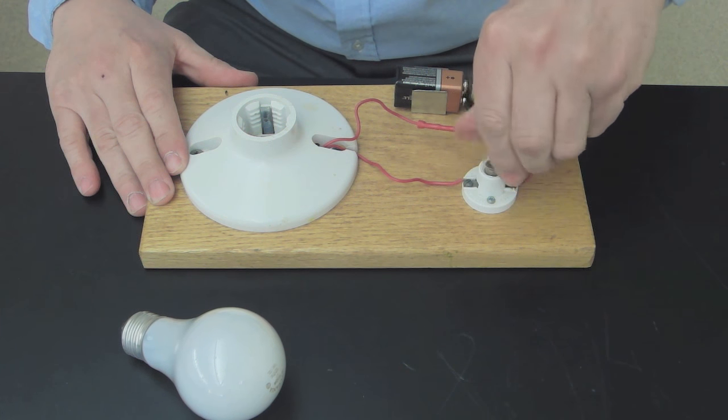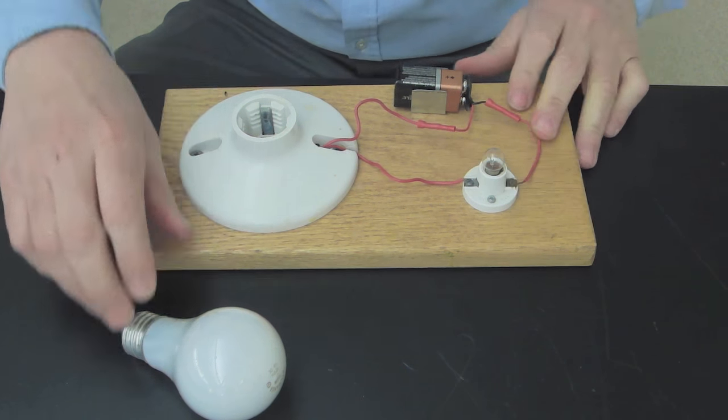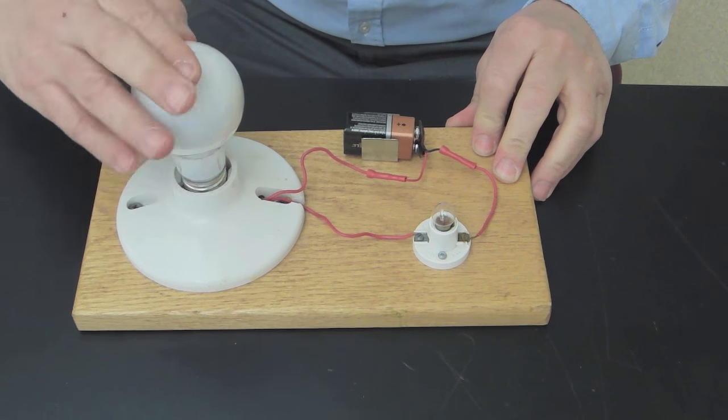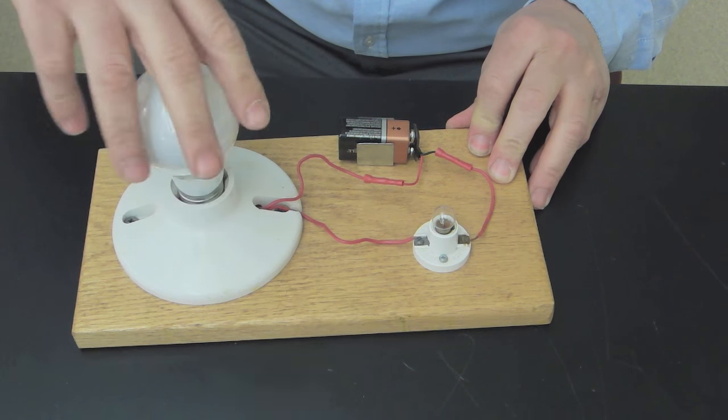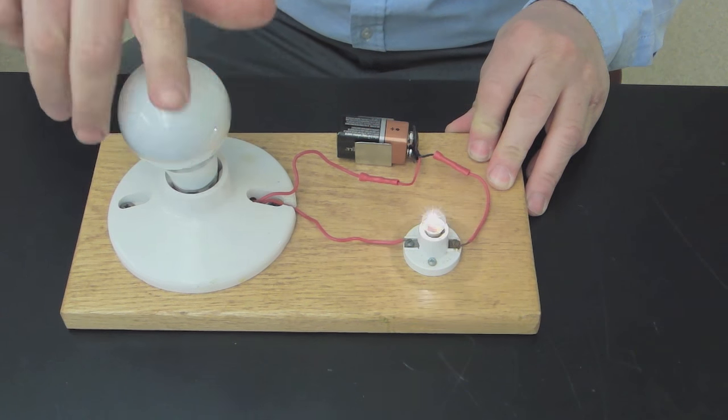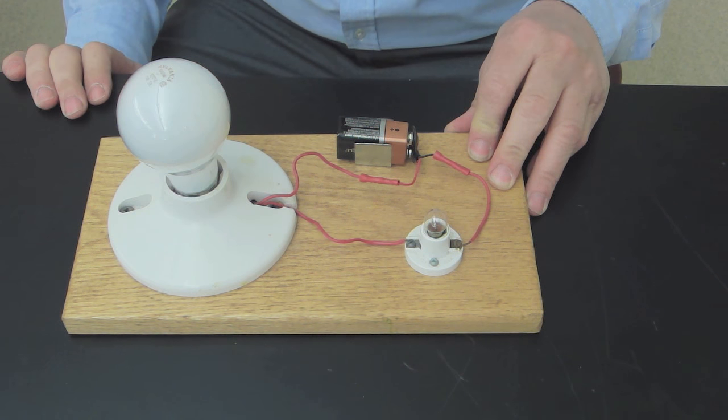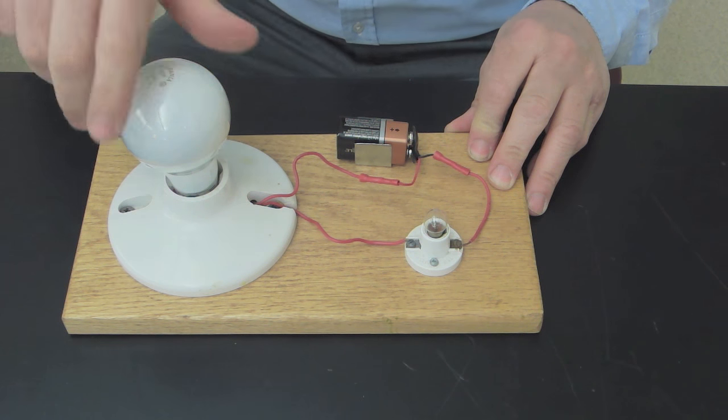First, I'll screw in this one-and-a-half volt bulb, there we go, and this 100-watt bulb, let's screw that in, and there we are. The small bulb lights, the large one doesn't, but the small bulb goes out.